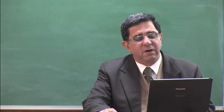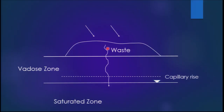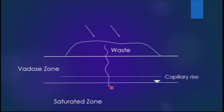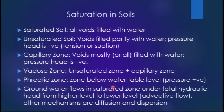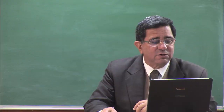The phenomenon we are examining is waste on the ground, rain falling on it, percolating through it, and going into the groundwater. Key terminologies include vadose zone, saturated zone, and capillary rise. Saturated soil has all voids filled with water and exists below the groundwater table. Above the groundwater table is partially saturated soil, where voids are partly filled with water and the pressure head is negative due to surface tension effects, creating suction.